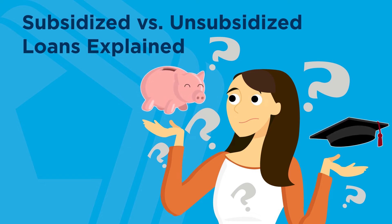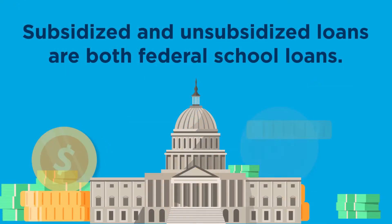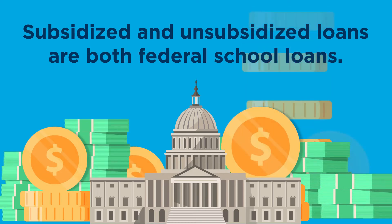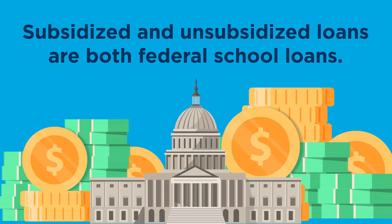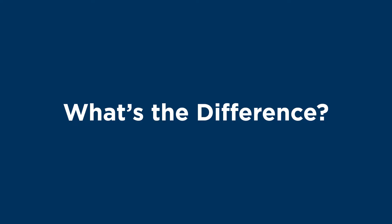Subsidized and unsubsidized loans are both federal school loans — in other words, loans made by the government, as opposed to a private lender like a credit union. You can use them to help pay for tuition and related costs at a college or university, community college, or technical school.